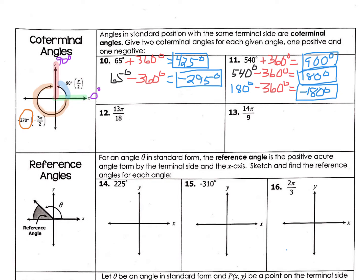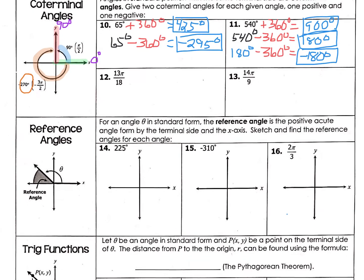So then let's look at radian measure. Here you've been given the angle in radian measure — I know it's in radian measure because it has π in it. So instead of adding 360 and subtracting 360, you add 2π, which is a full revolution, and subtract 2π. The problem with doing that is you have to deal with fractions and getting like denominators, which is fine because you have your calculator.